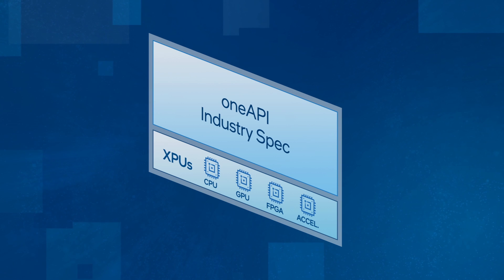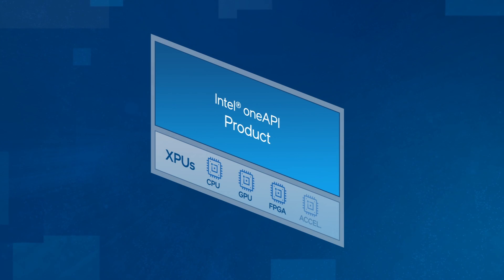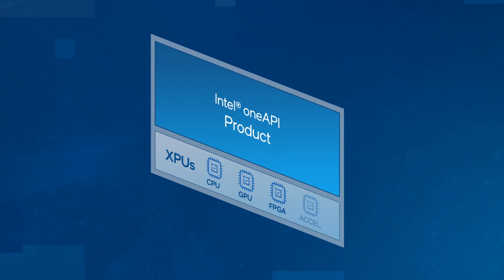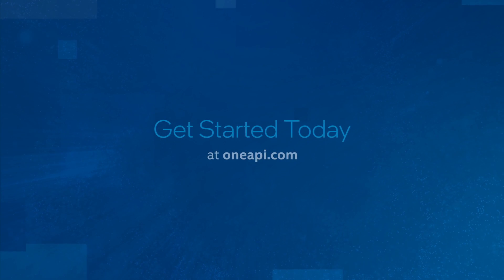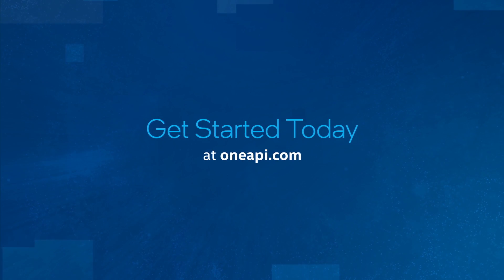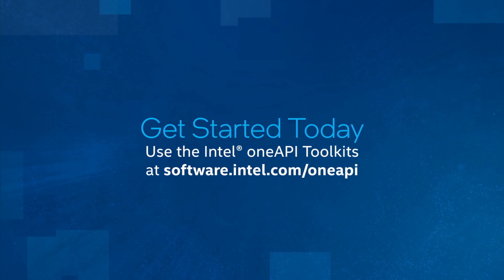In addition to the oneAPI industry specification that includes DPC++ and open source reference implementations, Intel offers production Intel oneAPI toolkits, which includes the Intel oneAPI Data Parallel C++ compiler, libraries, and advanced analysis and debug tools to accelerate performance on Intel architectures. Start programming in DPC++ today using the Intel oneAPI toolkits.